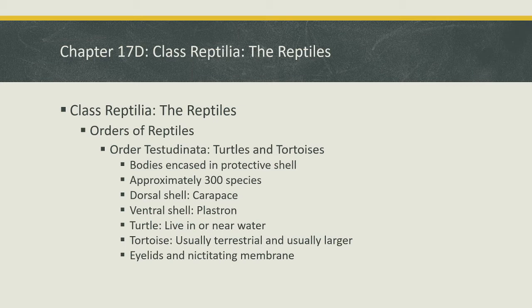Next order: Order Testudinata — turtles and tortoises. Their bodies are encased in a protective shell made up of usually around 50 bones, and the shell grows with the turtle or tortoise — unlike an insect's exoskeleton, which must be shed to allow growth. This order has about 300 species. The dorsal or upper shell is called the carapace, and the ventral or lower shell is called the plastron. Key difference: turtles usually live in or near water, whereas tortoises are usually terrestrial, often found in drier environments and generally larger.